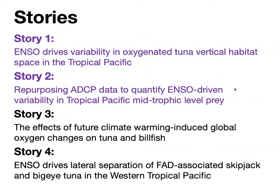Past work has looked at how climate-driven variations in temperature can affect tuna habitat quality and catches, but prey and oxygen availabilities haven't been nearly as well studied — so that's what I wanted to focus on. To better understand how variations in tropical Pacific oxygen and prey availability might affect tuna habitat quality, I studied oxygen in story number one and prey in story number two. In story number three, I looked at how tuna spatial distributions might be affected by future climate warming-induced changes in ocean oxygen. In story number four, I looked at how climate variability can alter incidental catch rates of threatened bigeye tuna in healthy skipjack tuna fisheries.